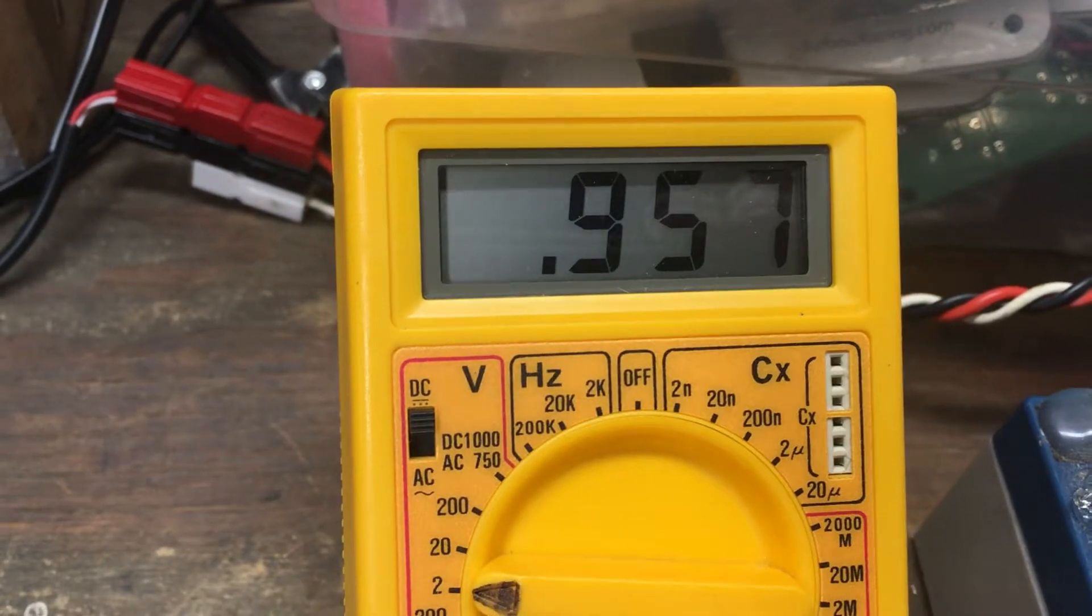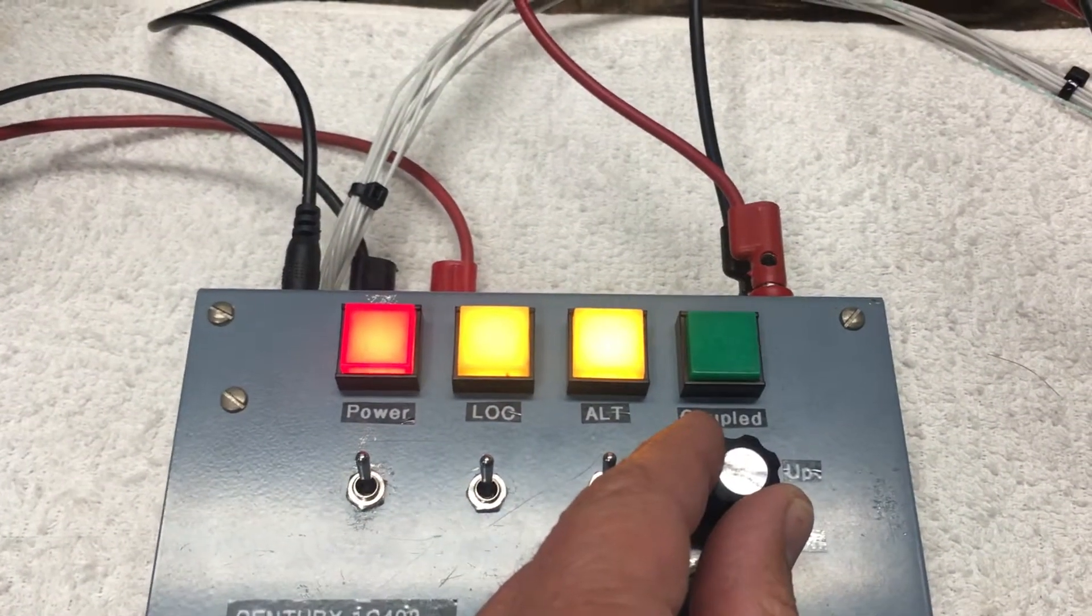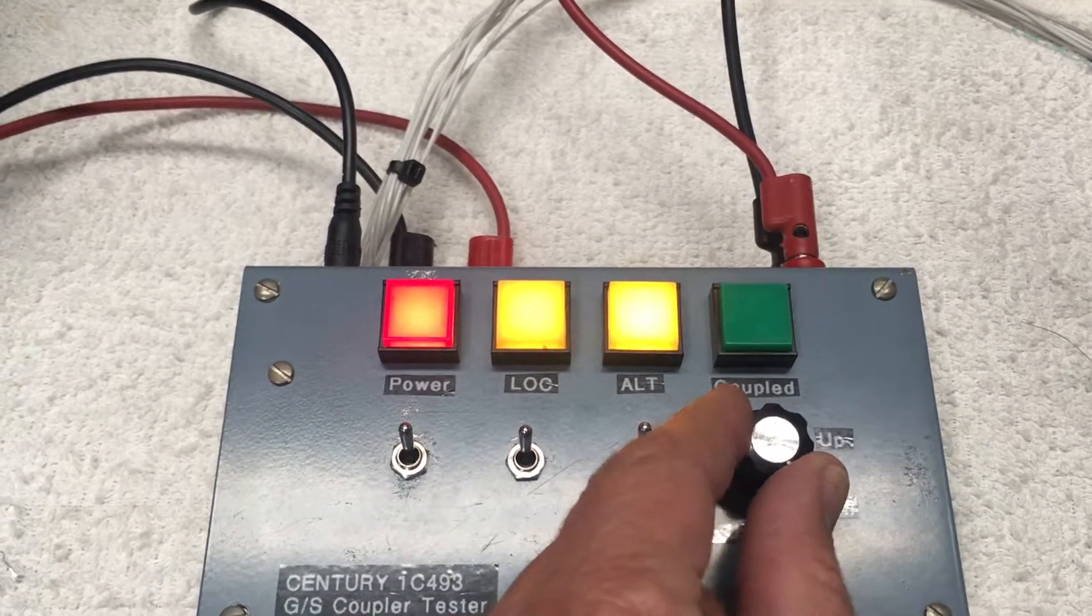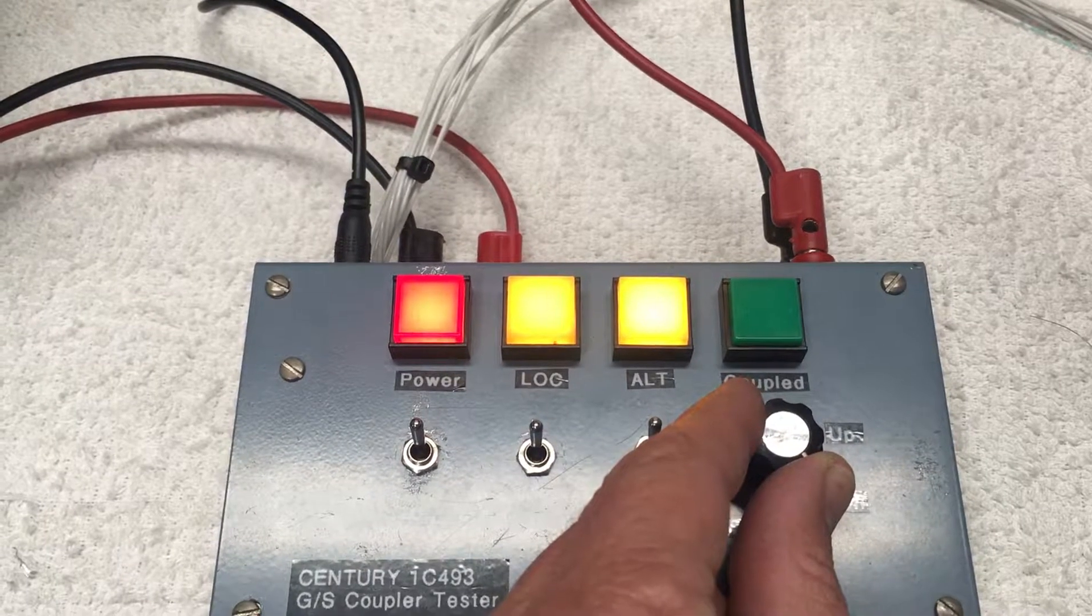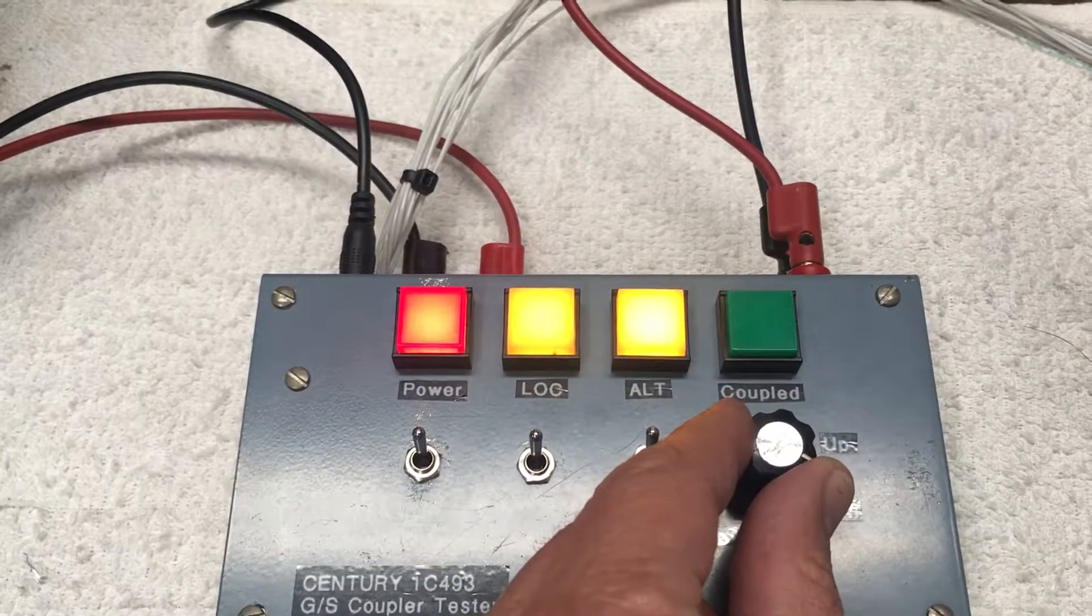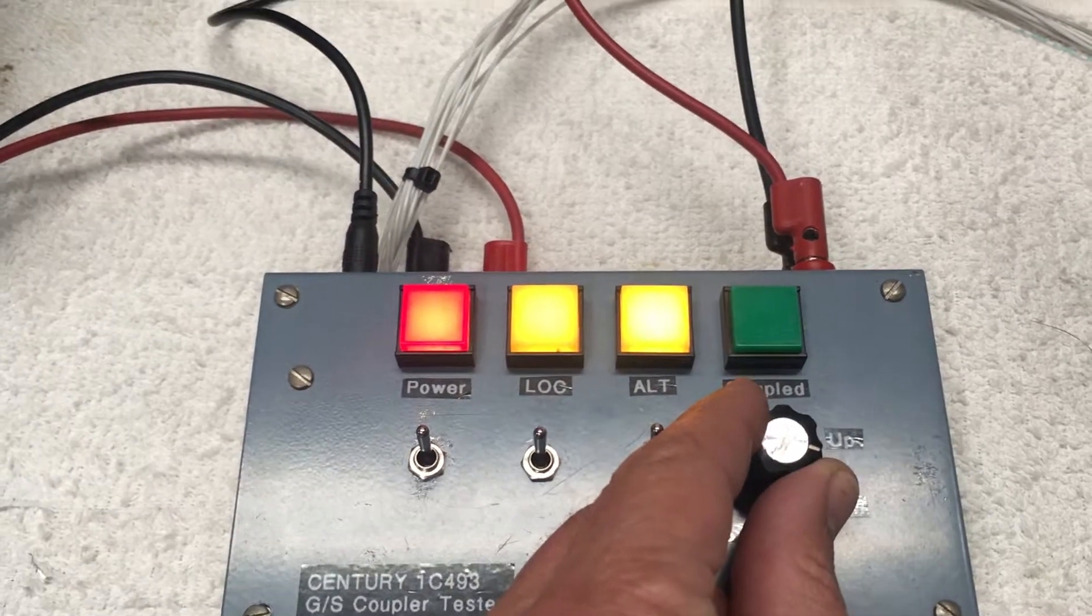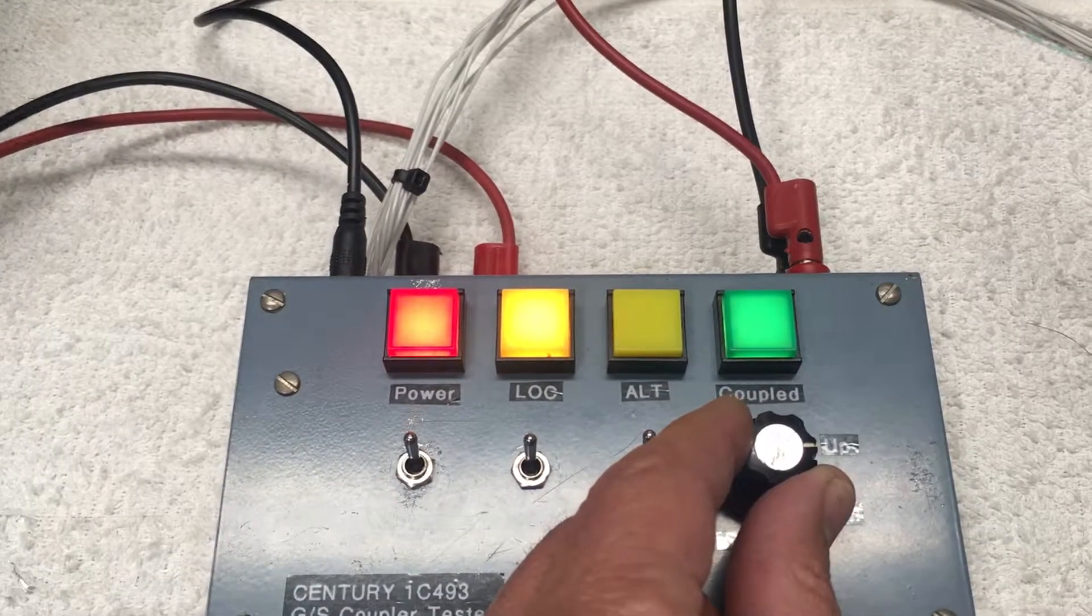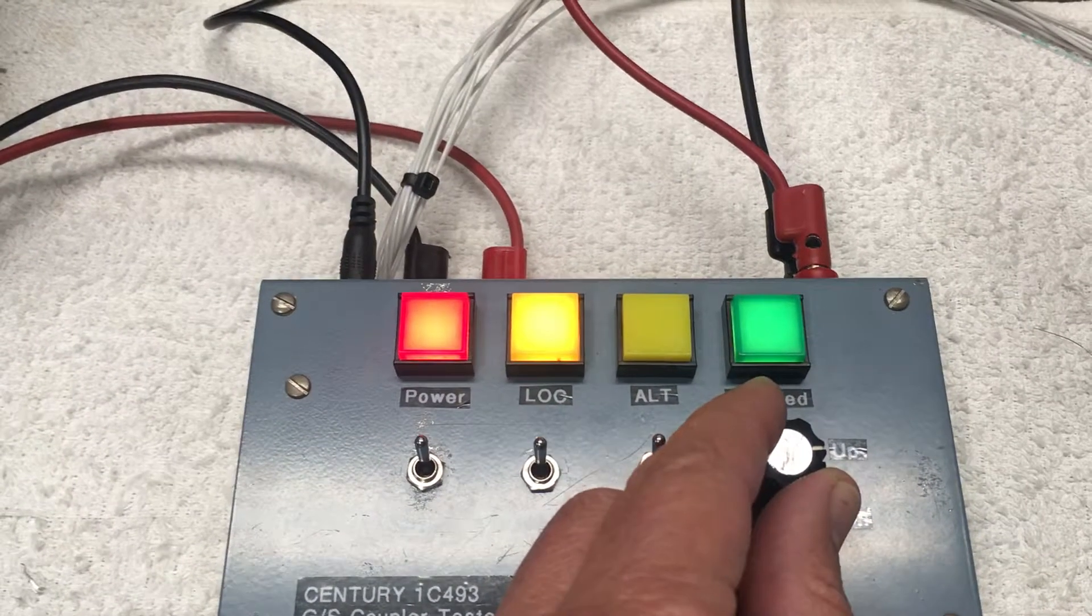As we're coming into the glide slope, I'll come back over here and tell you what the voltmeter says. It says 0.7 volts and dropping. Now it's at 0.6, 0.5, 0.4, 0.3, 0.2, 0.1, and coming up on zero. There's zero, and now we're on the glide slope.